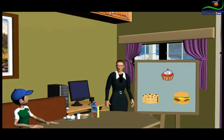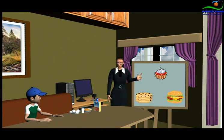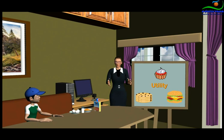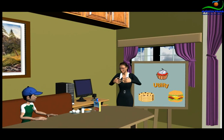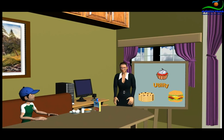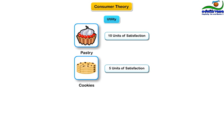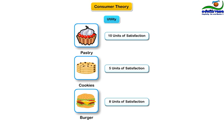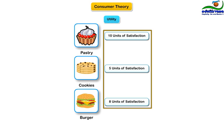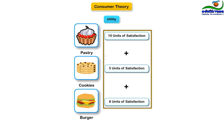Depending on your constitution, you may derive different amounts of satisfaction from these different things. Let's define a concept of utility that measures the amount of satisfaction you get by eating these things. Knowing you, I am sure you derive maximum satisfaction from pastry compared to a burger or a cookie. Let's say you derive 10 units of satisfaction from eating a pastry, 5 units from eating cookies, and 8 units from eating a burger when you are hungry. So if you eat all of these, your total utility would be 10 plus 5 plus 8, which equals 23.